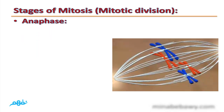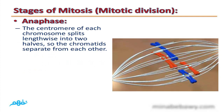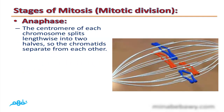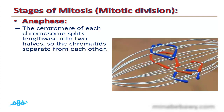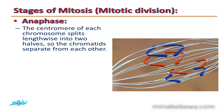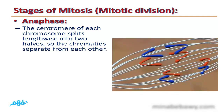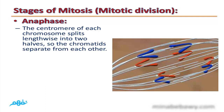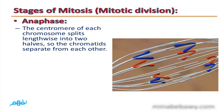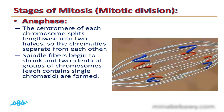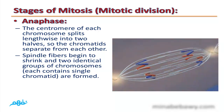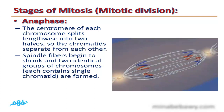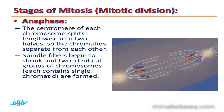The third stage is called anaphase. As seen in this video, the centromere of each chromosome splits lengthwise into two halves, so the chromatids separate from each other. Spindle fibers begin to shrink, and two identical groups of chromosomes — each containing a single chromatid — are formed.